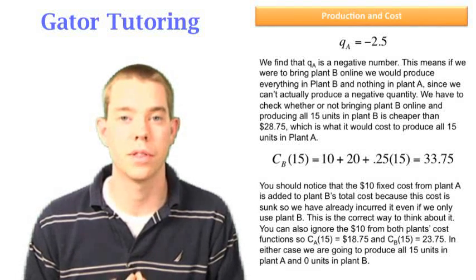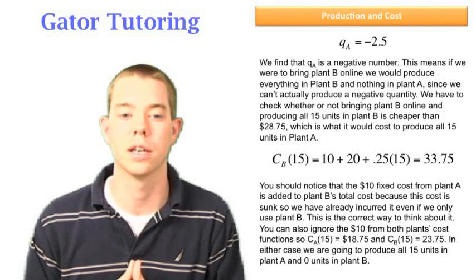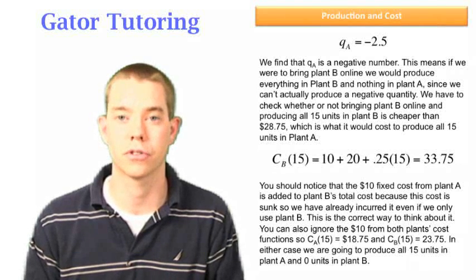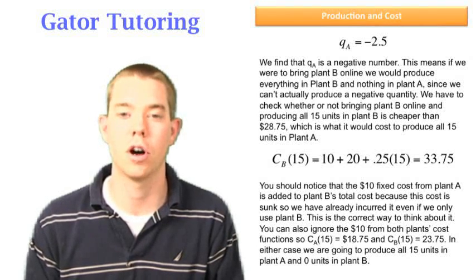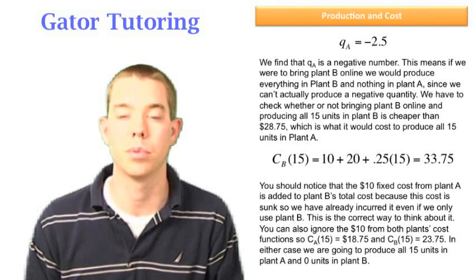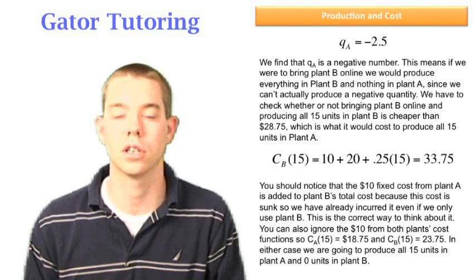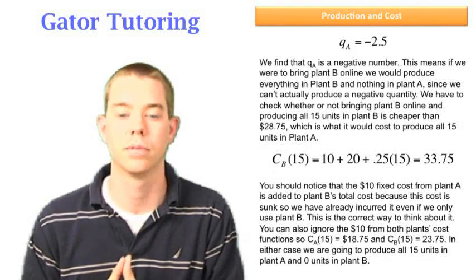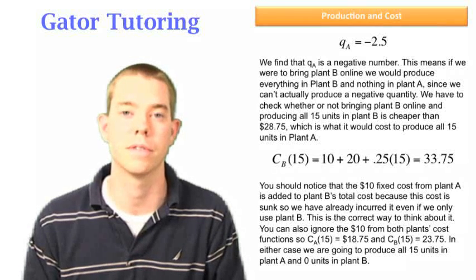This is the correct way to think about it, but you can also think about it like this: if you ignore plant A's $10 fixed cost from the start, we get that the cost of producing 15 units is $18.75. Then we can ignore plant A's fixed cost again for plant B and we see that cost is $23.75.